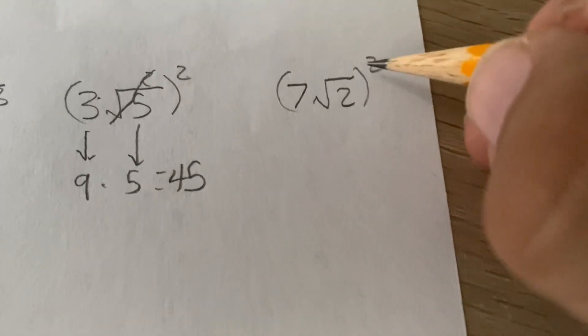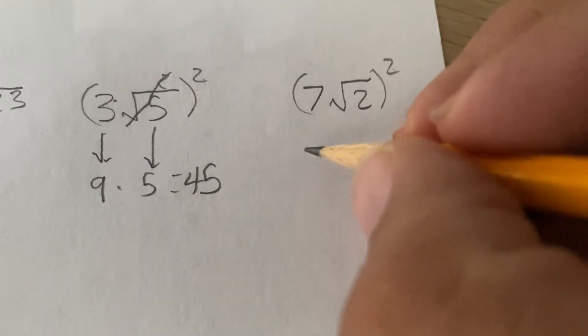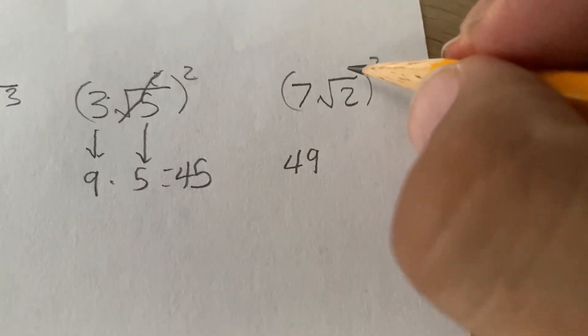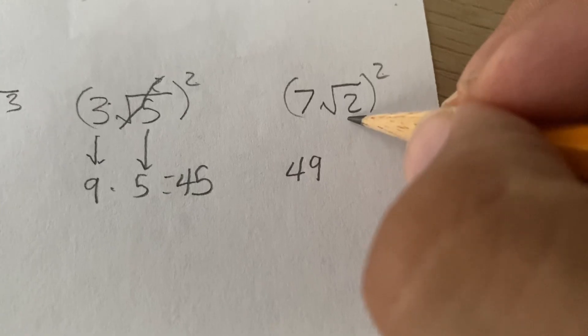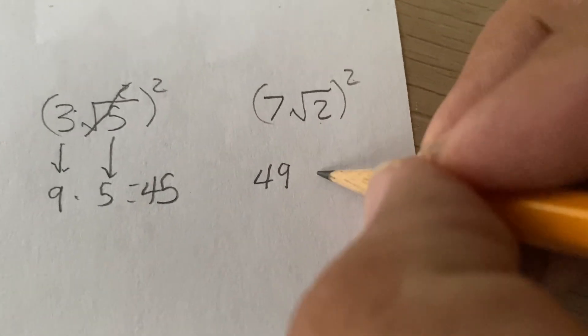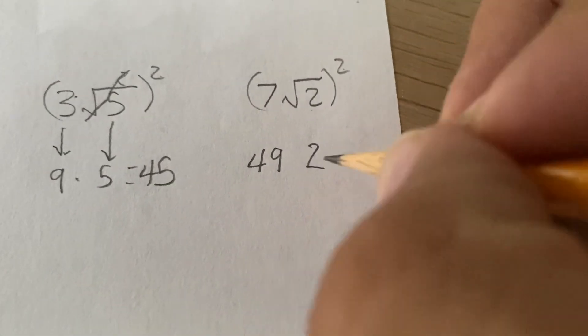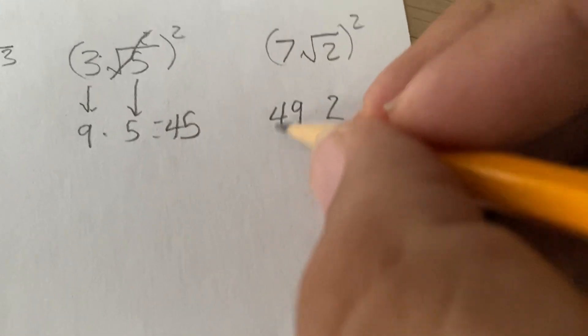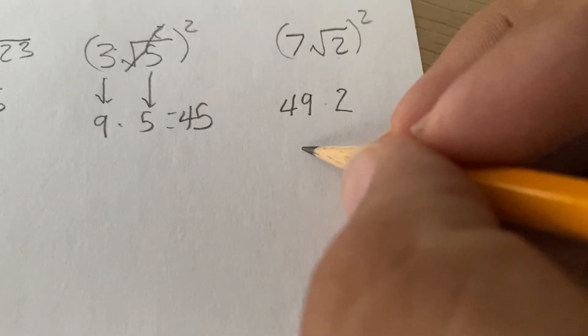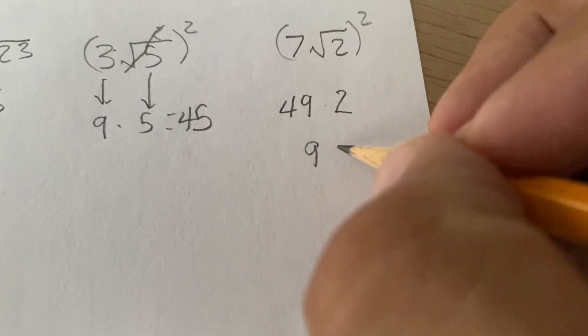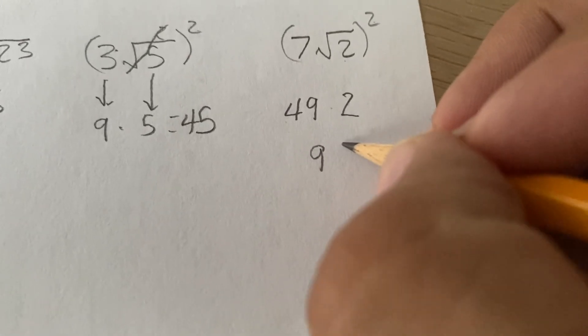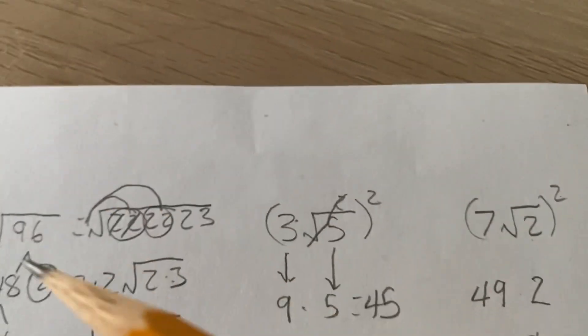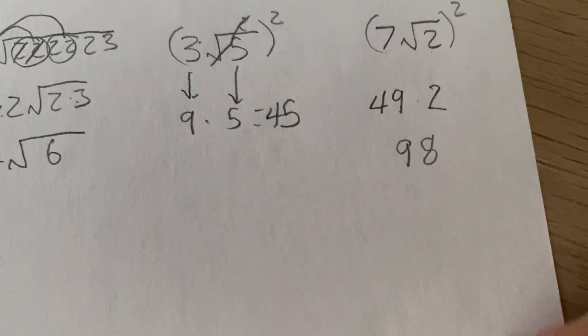What about this? Okay, well, 7 squared is 49. And the square root of 2 squared is going to be 2. So, there we go. So, multiply that, and we're going to get 40 plus 40, that's 80, plus 18, that's 98. There we go. Okay, I was about to say, is it the same as the first one? No, that was 96.